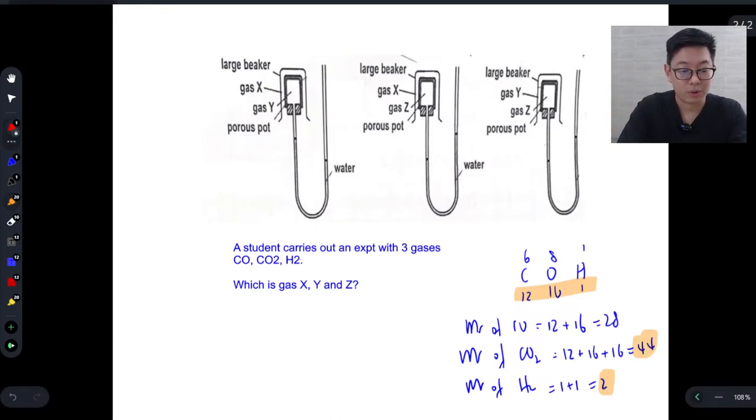So let's look at the experiments, let's look at the first porous pot. Now the water level here has risen up and what this means is that gas Y is moving out, diffusing out, much faster than gas X can diffuse in.